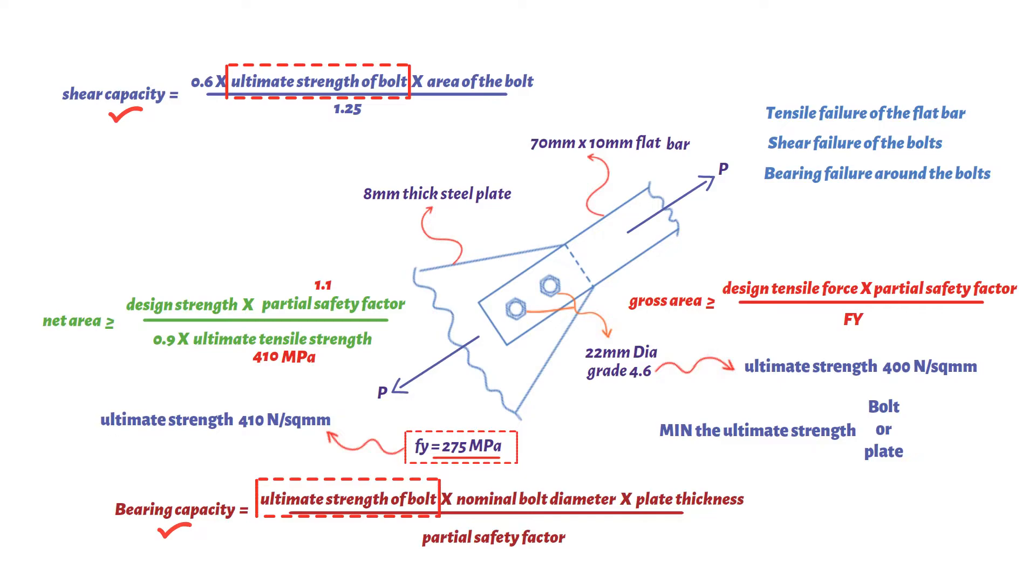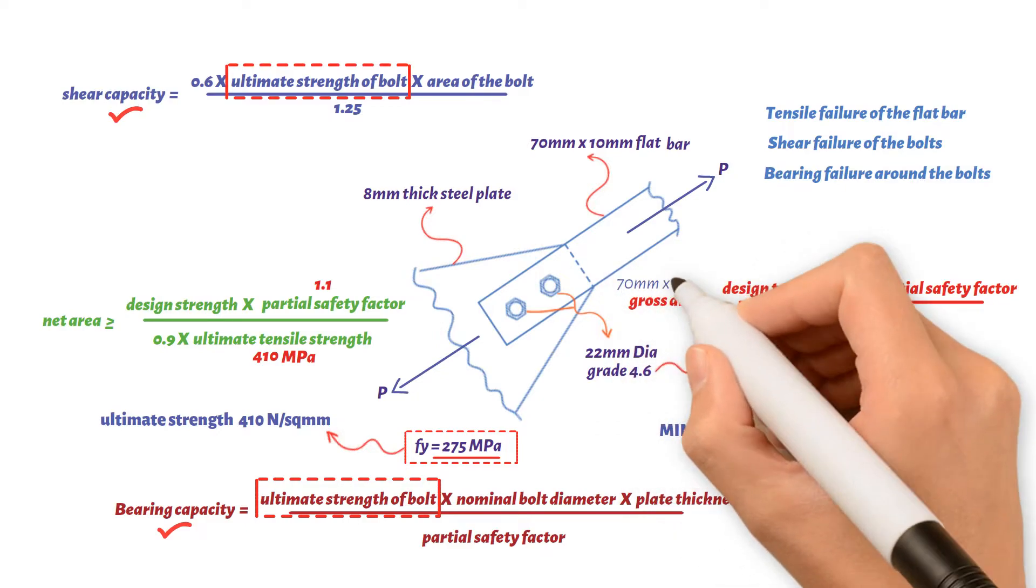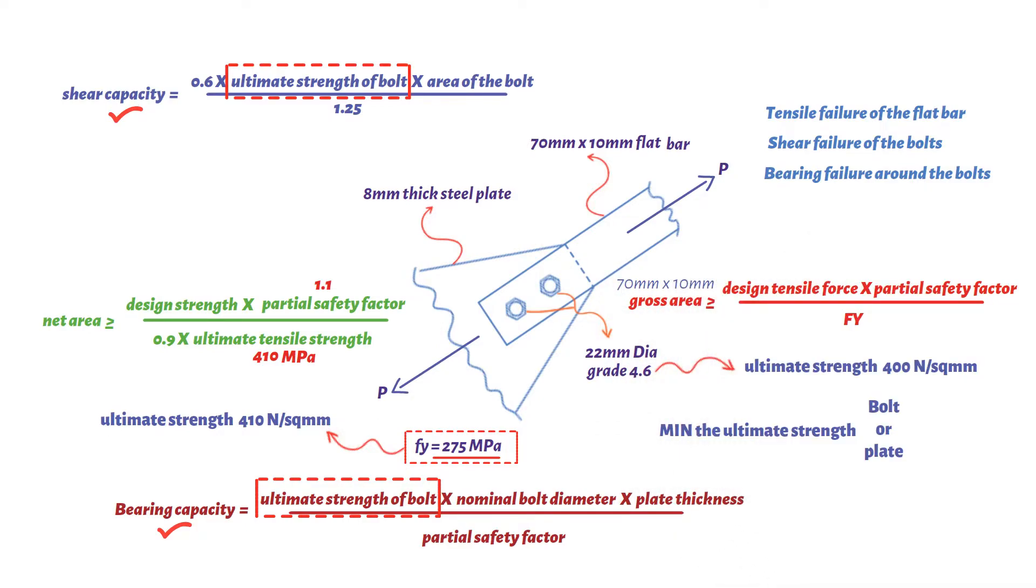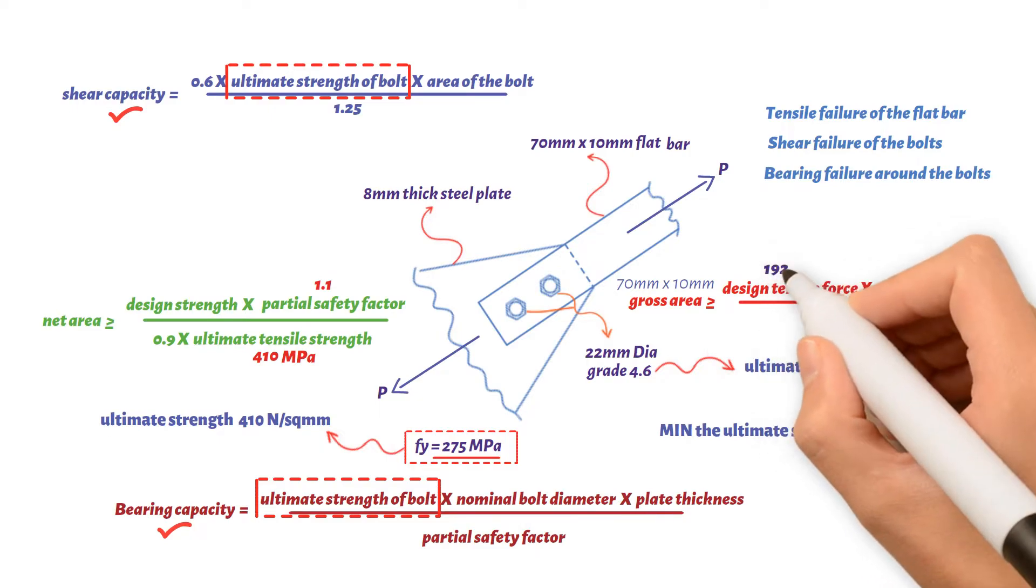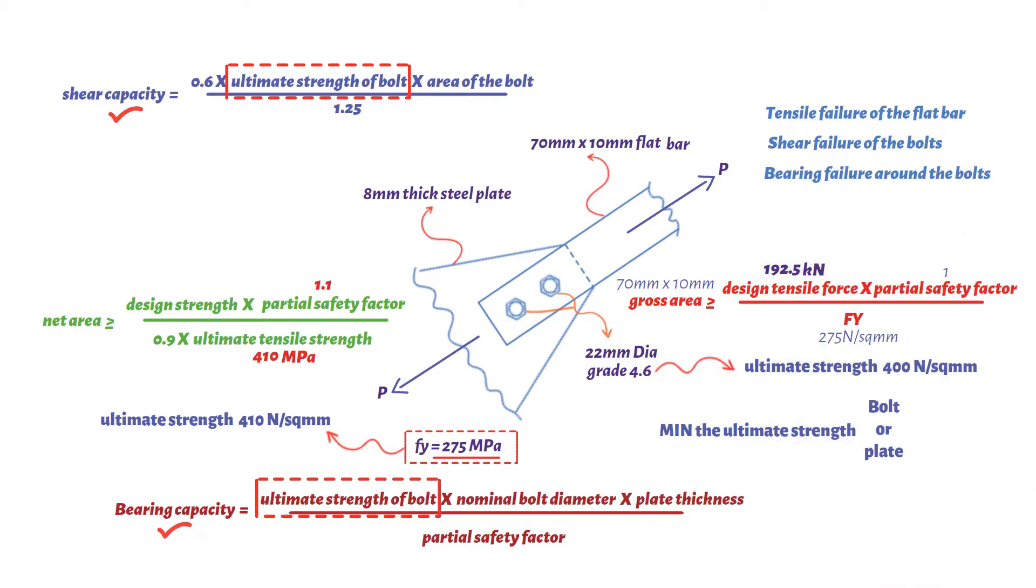Based on gross area of tie equation, the design tensile force would be gross area 70 millimeters times 10 millimeters times characteristic yield strength 275 newton per square millimeters divided by 1000 to get our force with kilonewton. This gives us a value of 192.5 kilonewtons.